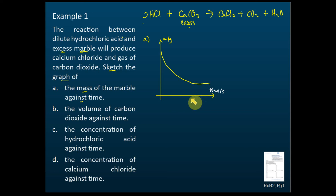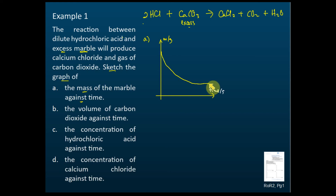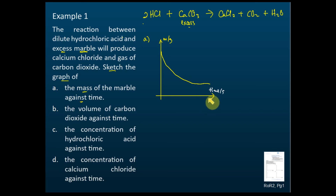When asked to sketch a graph, first determine whether the quantity will decrease or increase — reactants decrease, products increase. Second, determine the shape: it is a curve, not a straight line, because the rate of reaction decreases over time, so the gradient must decrease over time. Third, determine whether the line finally touches the horizontal axis or not. If the substance is in excess, it will not touch the horizontal axis. Your teacher will check these three things when marking.